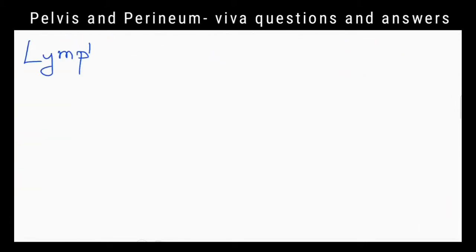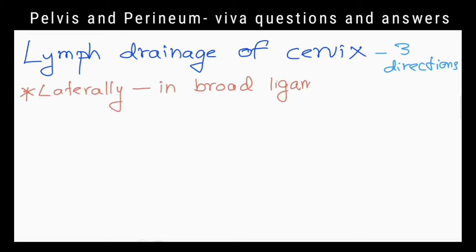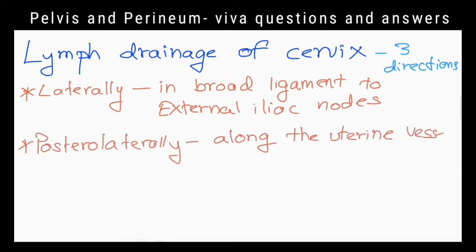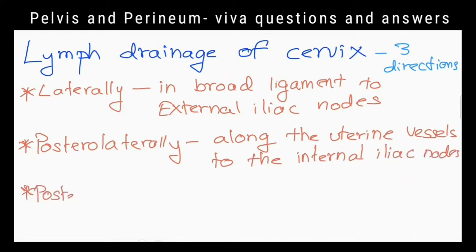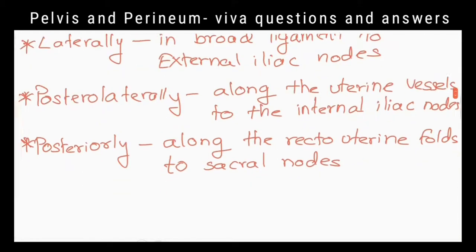Tell me about the lymph drainage of the cervix. It drains in three directions: laterally in the broad ligament to external iliac lymph nodes, posterolaterally along uterine vessels to internal iliac lymph nodes, and posteriorly along the recto-uterine folds to sacral nodes.